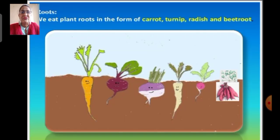Here are a few examples of edible parts of plants. First are roots. We eat plant roots in the form of carrot, turnip, radish, beetroot and sweet potatoes. These are all examples of edible roots.